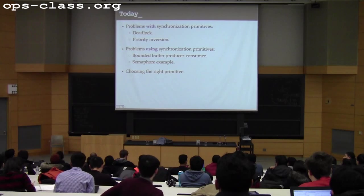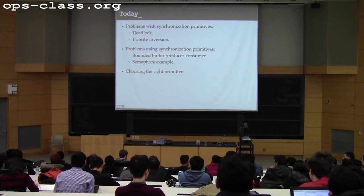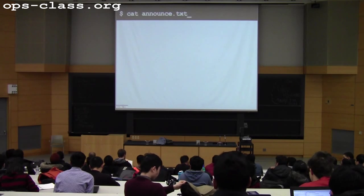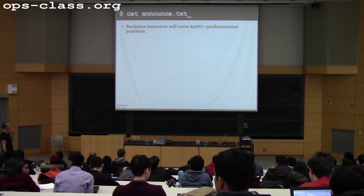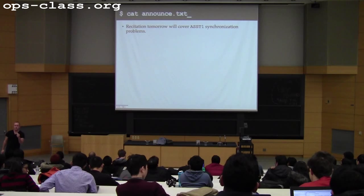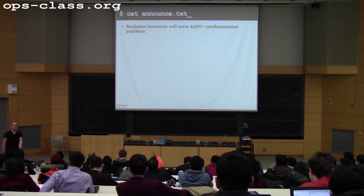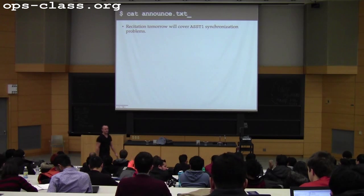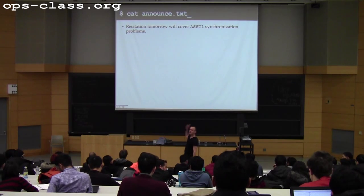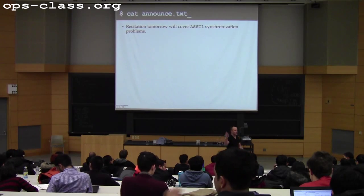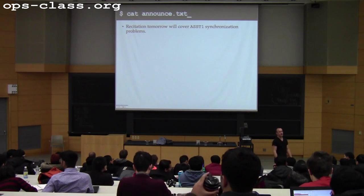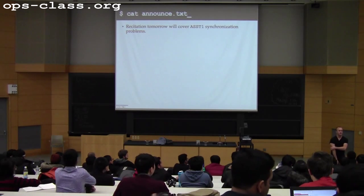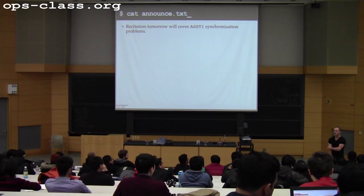At the very end we'll talk about how to approach synchronization problems and choose a primitive that's a good fit. Tomorrow, Jinghao is going to focus on condition variables and help you think about how to address the synchronization problems in assignment one. As a reminder, the reader-writer locks, whale mating, and stoplight problems are hopefully fun exercises, but they are not code you'll need to rely on for later assignments.